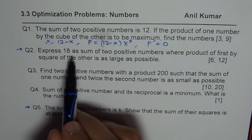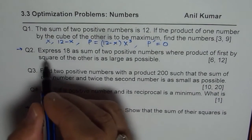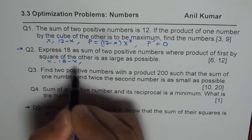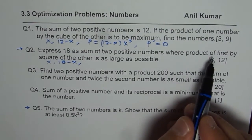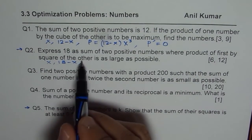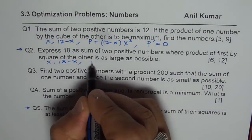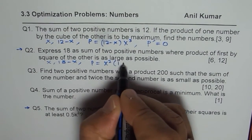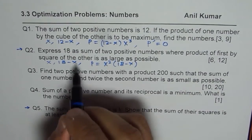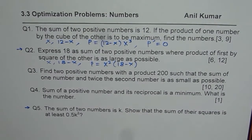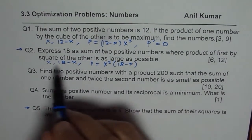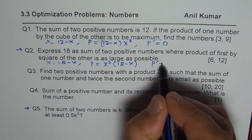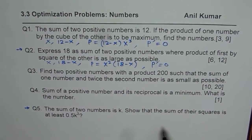Question number 2: express 18 as the sum of two positive numbers, so one number is x and the other is 18 − x. The product of the first by the square of the other — preferably square the simpler one. So p = x² · (18 − x). You need the largest value, so follow the same method: set p′ = 0. That is the strategy.